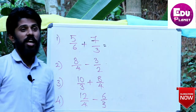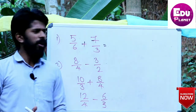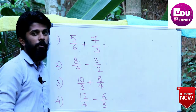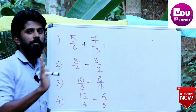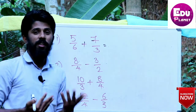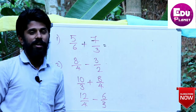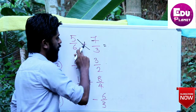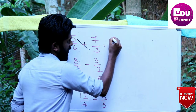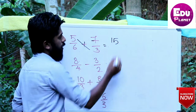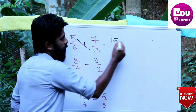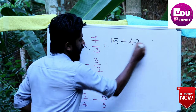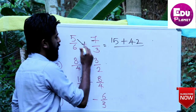We will now write a cross multiplication. When the denominators are different, we will use cross multiplication from the denominators. For example, 6 by 7: 6 into 7 equals 42.